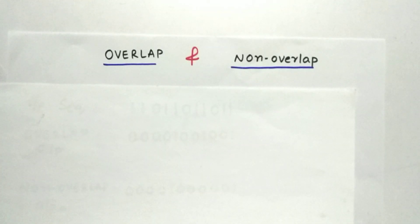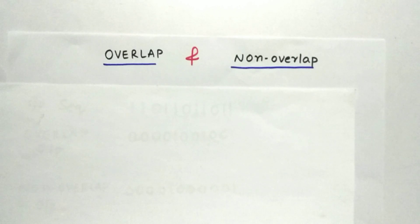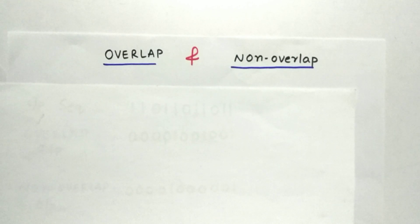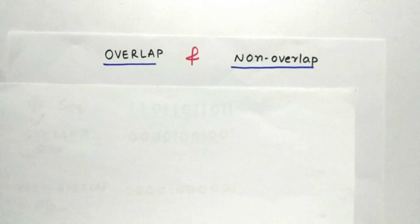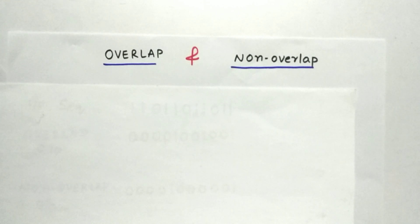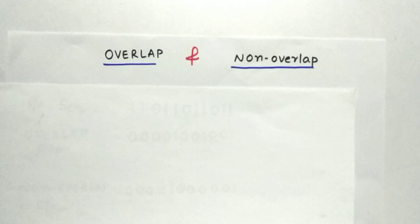Before going to the state machine, let us understand the terms overlap and non-overlap. Overlap means a bit of the previous sequence can be used in the next sequence, whereas in non-overlap the bits of the previous sequence cannot be used in the next sequence.